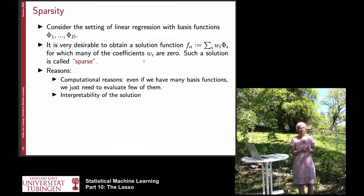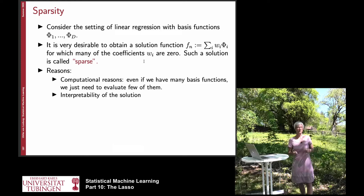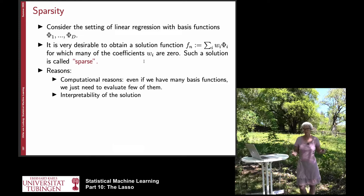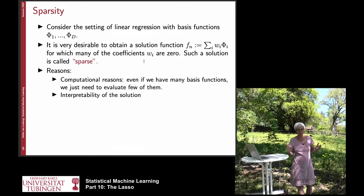If a doctor looks at the solution the algorithm found, he can see that out of 200 input variables, only 10 are considered, and then with his background knowledge he can judge whether he trusts the algorithm. For example, if the algorithm found blood pressure as important and that's already known to relate to the disease, you might trust the algorithm more. In the medical domain and other domains where it's really important that experts trust what the algorithm produces, this kind of interpretability is really important, and LASSO is one way to try to achieve a bit of interpretability.